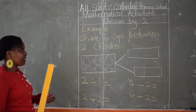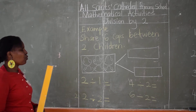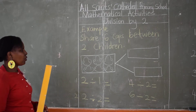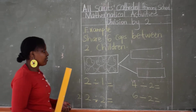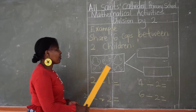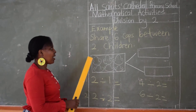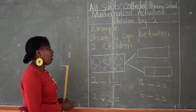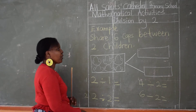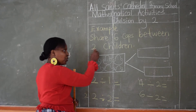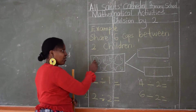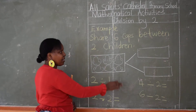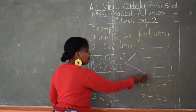We learned how to do division as equal grouping. It becomes easy now. Here we have six caps and we have two children. How many groups are we going to create? We are going to create two groups. There are two children, so I'm going to create two groups. One, two.